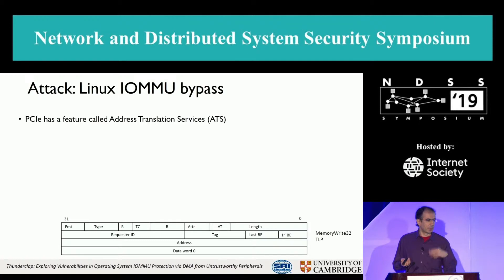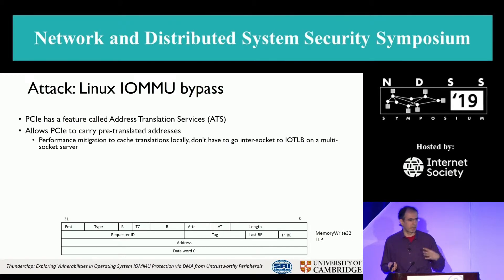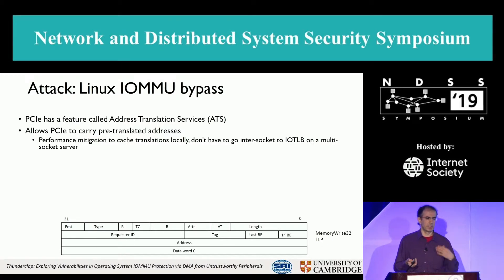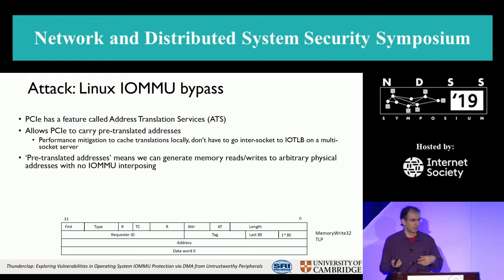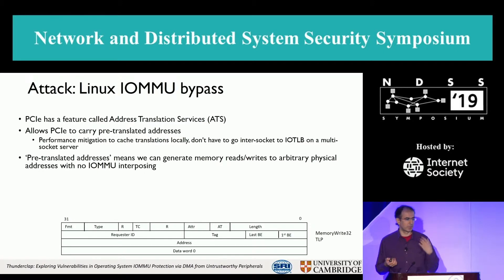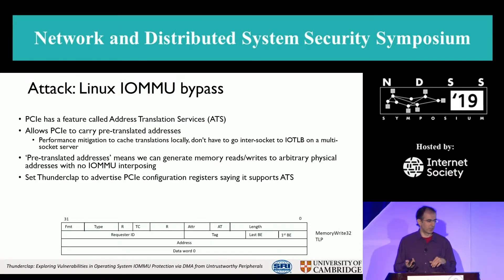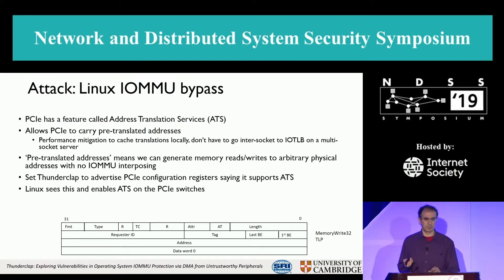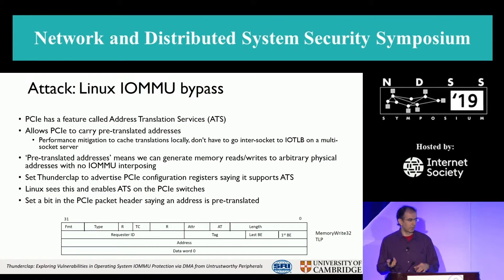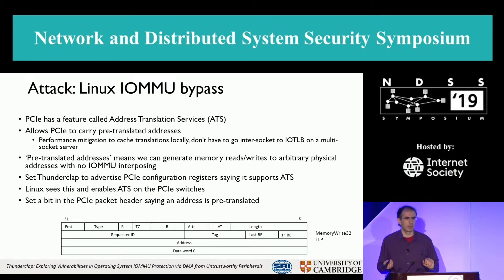On Linux, we want to bypass the IOMMU entirely. There's a handy feature called Address Translation Services, which means that for PCI Express it can carry pre-translated addresses for performance reasons — so we don't have to go across sockets in a multi-socket server. Pre-translated addresses mean we can do memory reads and writes to arbitrary physical addresses without the IOMMU in the way. We tell the system we support ATS, Linux enables ATS on the PCI switches, and then we set a bit in our PCI packets to say the address is pre-translated. We've completely bypassed the IOMMU.